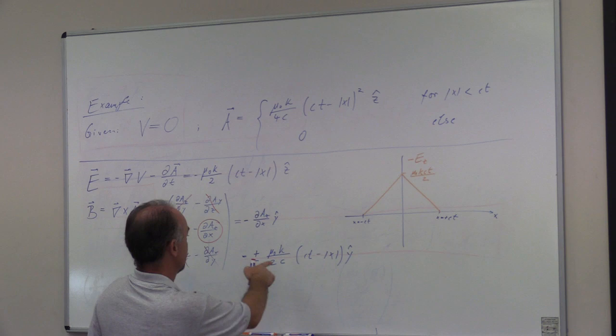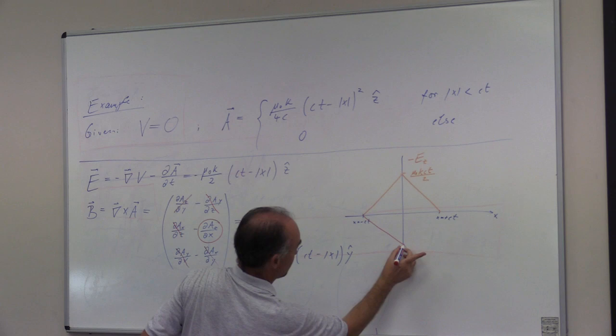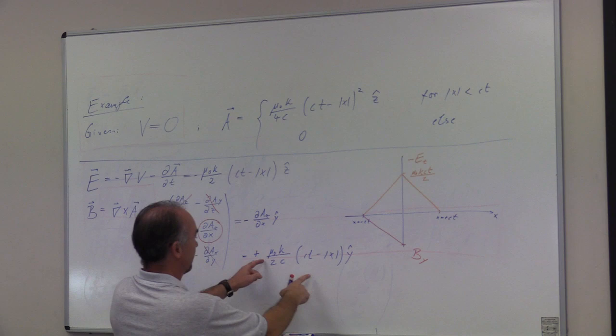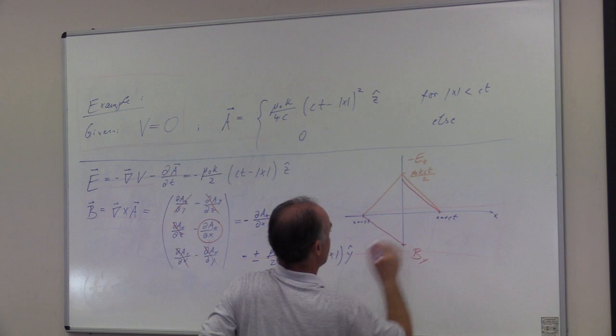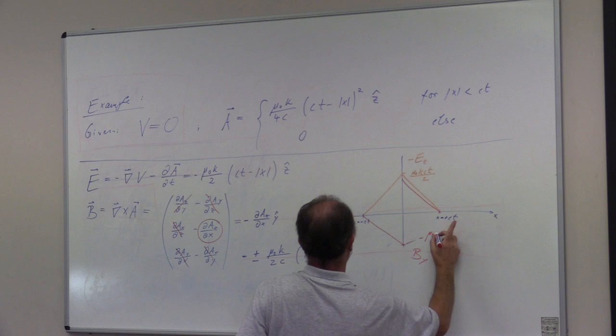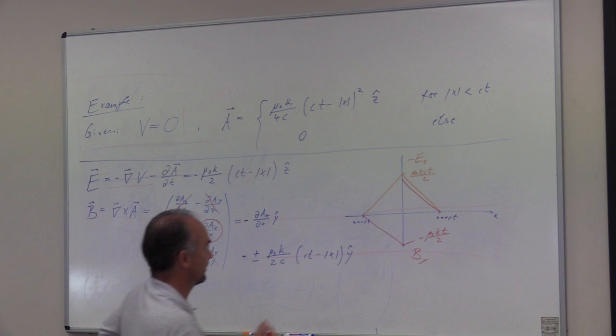So our y-component actually starts out at zero, of course. For negative values, it becomes negative to this value here. And then at zero, it just switches sign. So at zero there's a discontinuity. And the maximum value here is minus mu naught k over 2c.